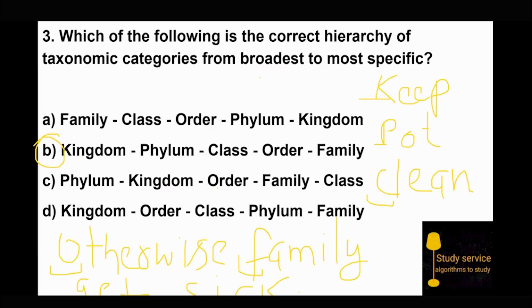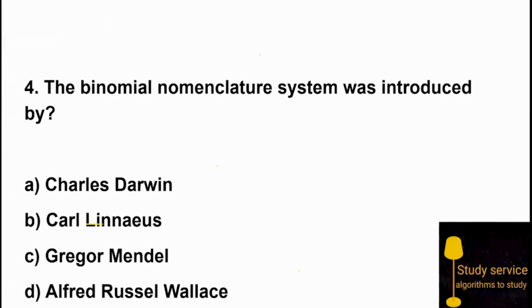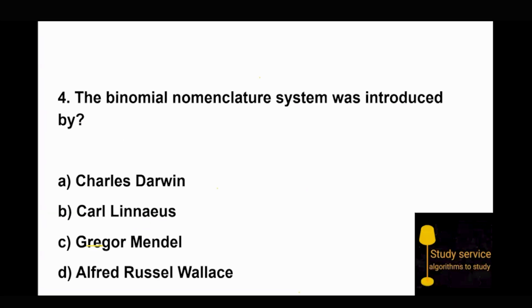Always remember: 'Keep Pot Clean Otherwise Family Gets Sick' — Kingdom, Phylum, Class, Order, Family, Genus, Species. This sequence helps you classify any plant or animal. Question 4: The binomial nomenclature system was introduced by Carolus Linnaeus. Option B is the right answer.